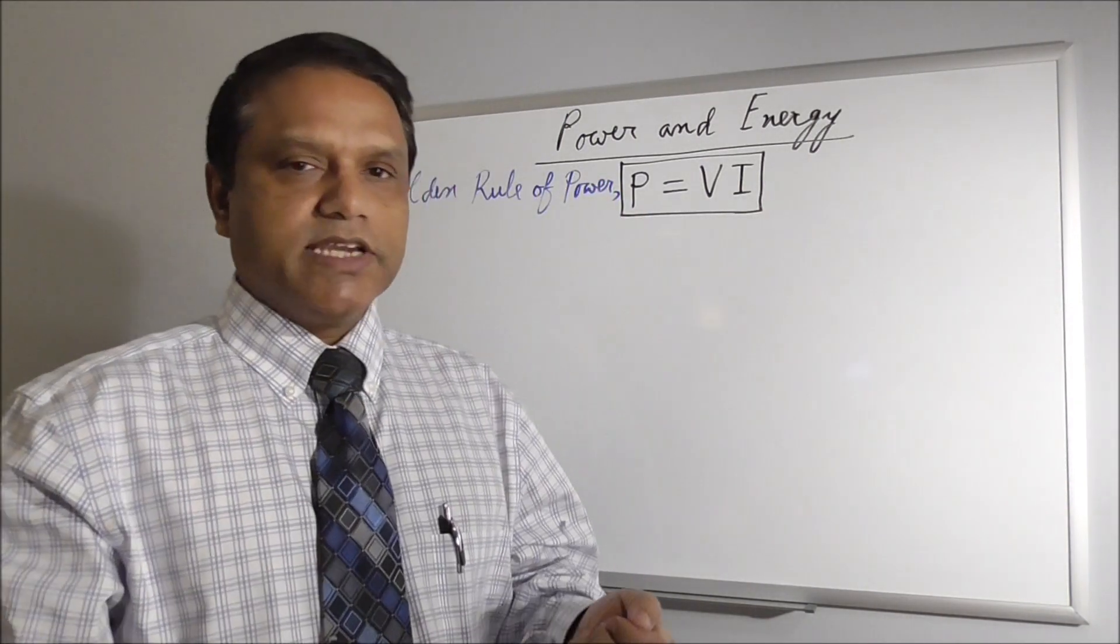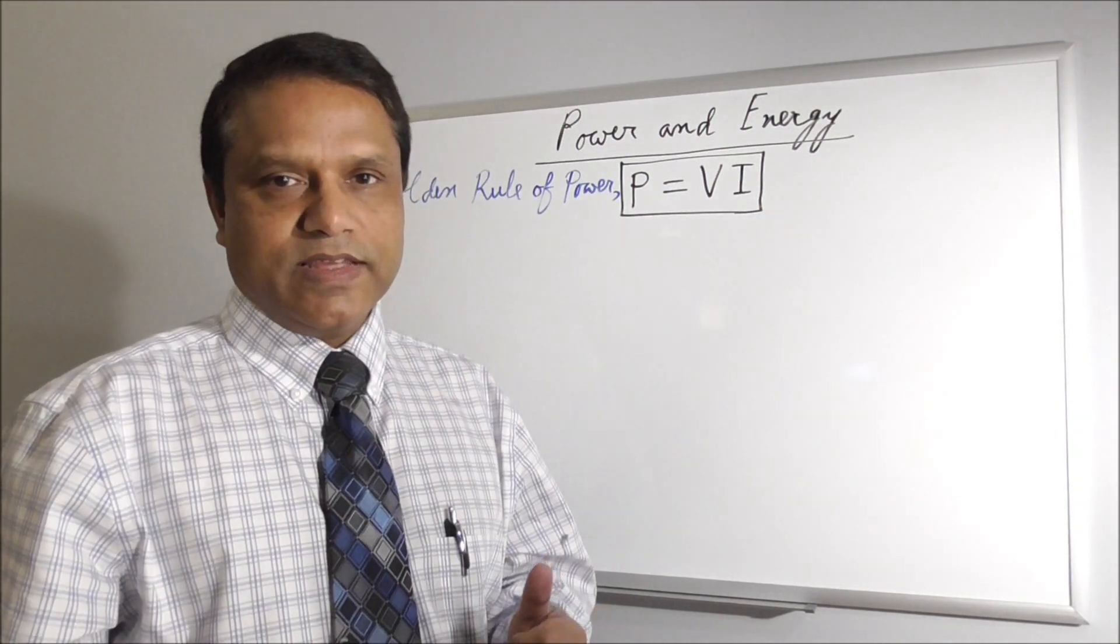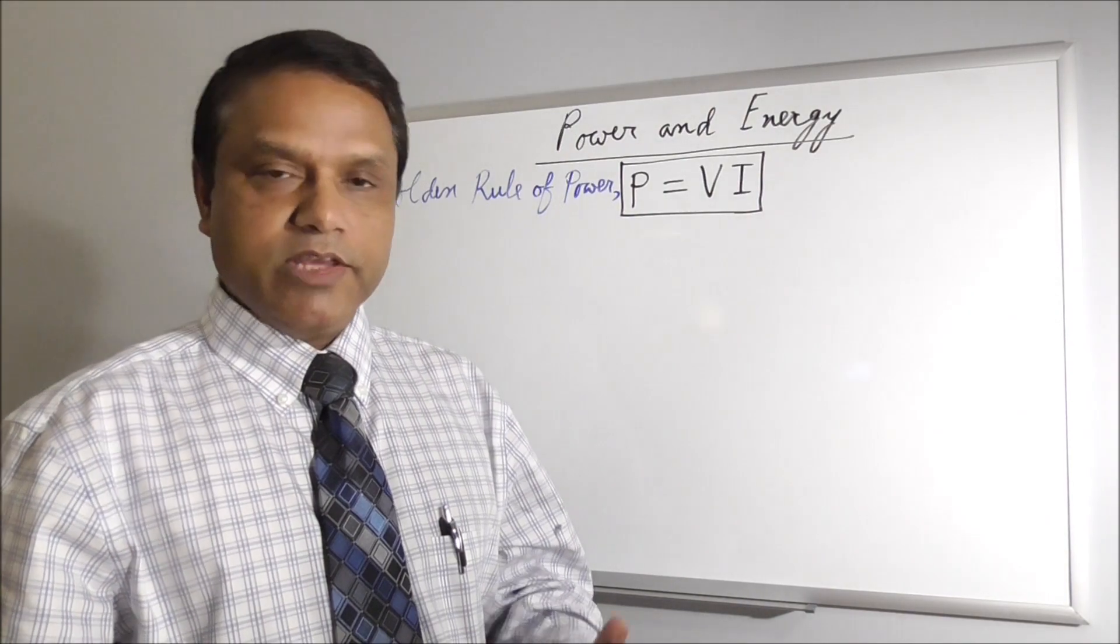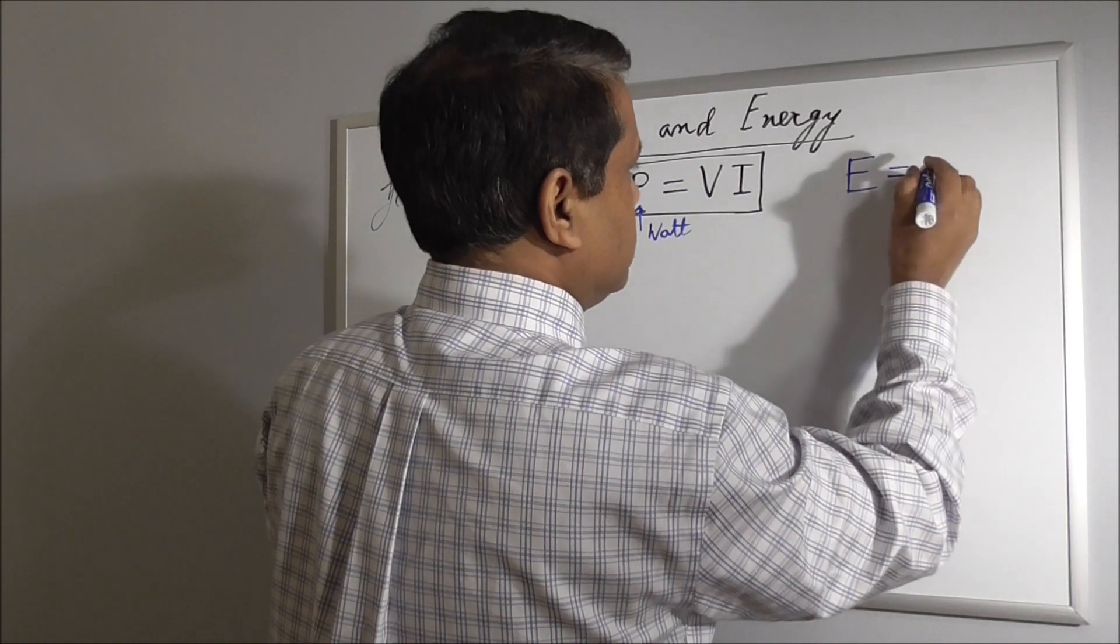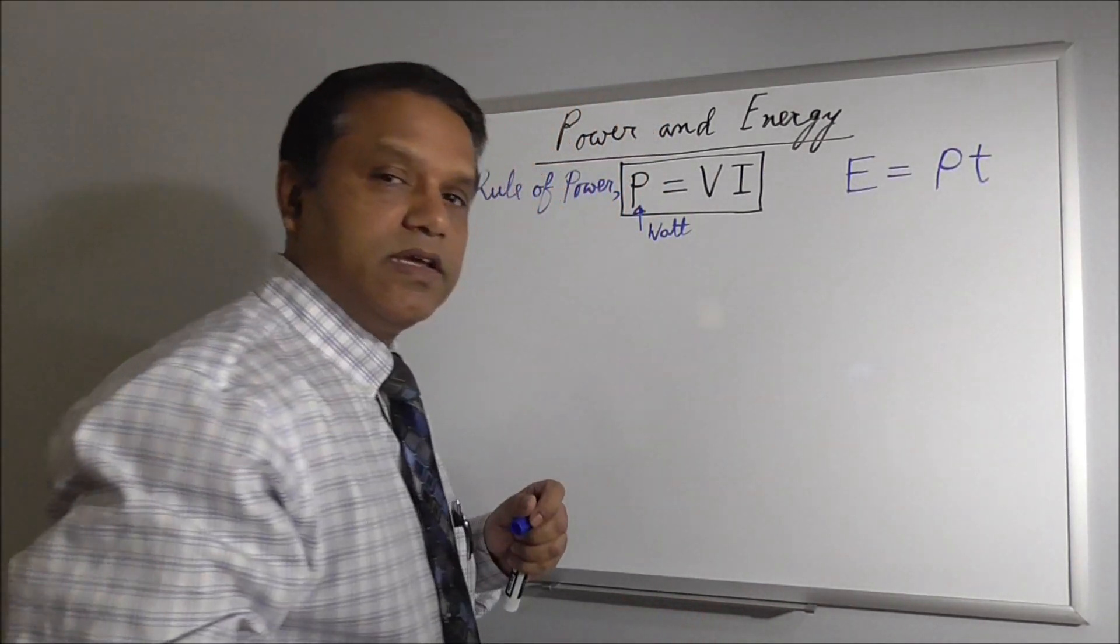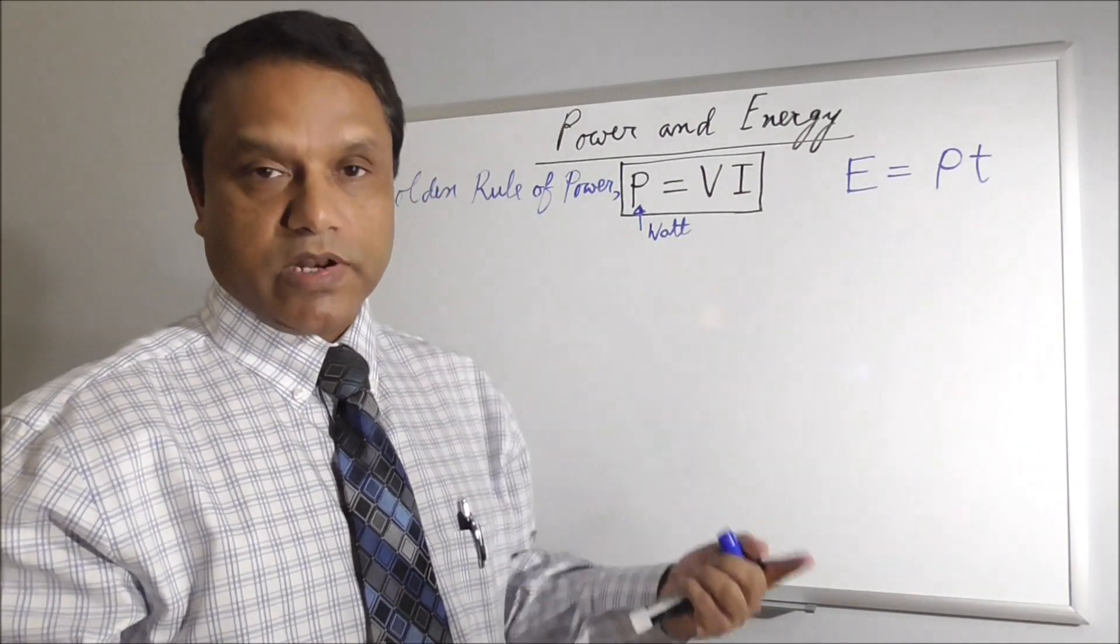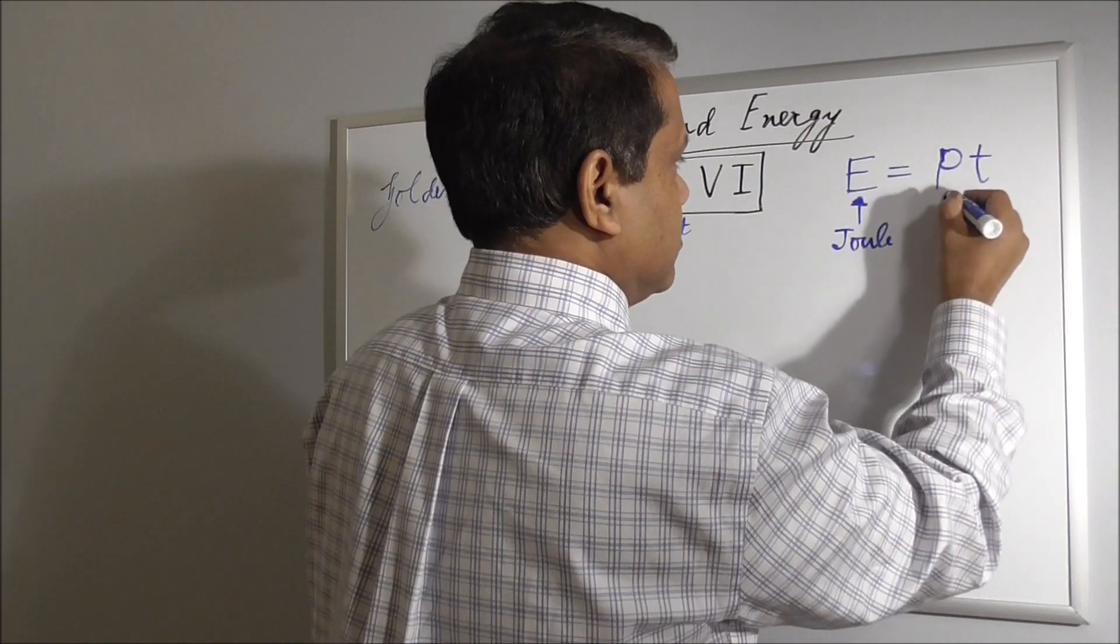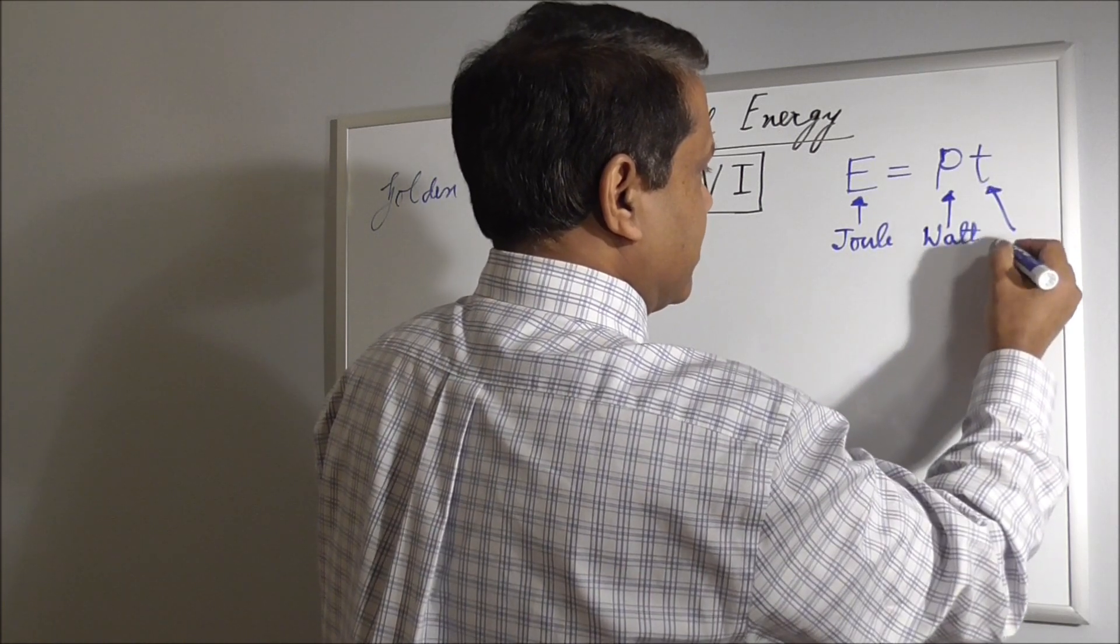Power basically tells you how much energy you are burning per second. The unit for energy is joule. So how many joules of energy are burning per second is called power and the unit of power is watt. If you write E for energy, E equals if you multiply power times time you get total energy, because power is energy per second. If you multiply by number of seconds you get total energy. Unit of this is joules, this is time in seconds.